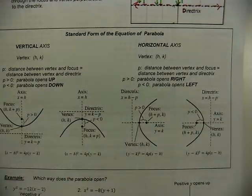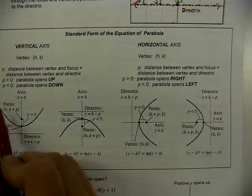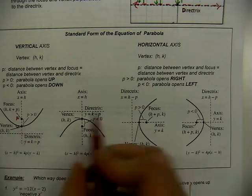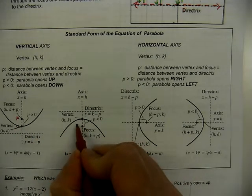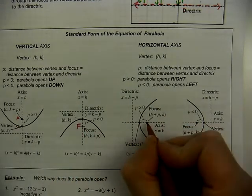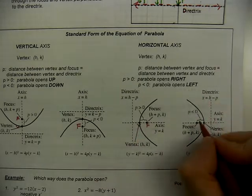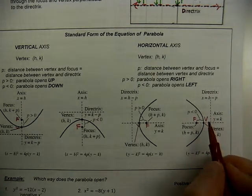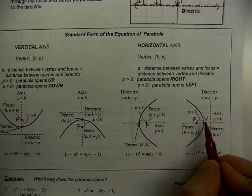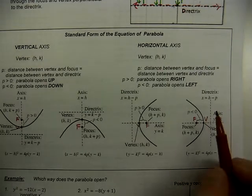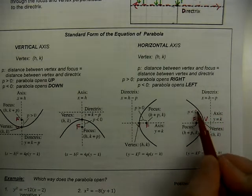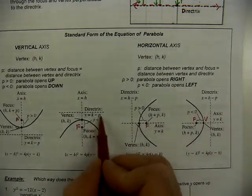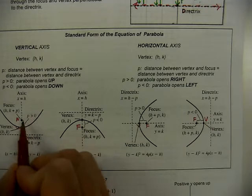Notice what we're really focusing on is the direction the parabola opens. If it opens up, the focus is above the vertex. If it opens down, the focus is below. If it opens to the right, the focus is to the right of the vertex. If it opens to the left, the focus is to the left. The value of P is negative if opening down or to the left, and positive if opening up or to the right.